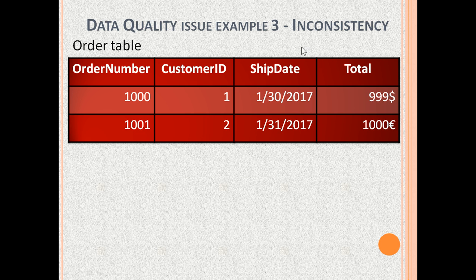The third data quality issue is inconsistency. Here is the order table with columns: order number, customer ID, ship date and total. The totals are in different currencies — this one is in dollars and this one is in euros. The currency should be consistent.